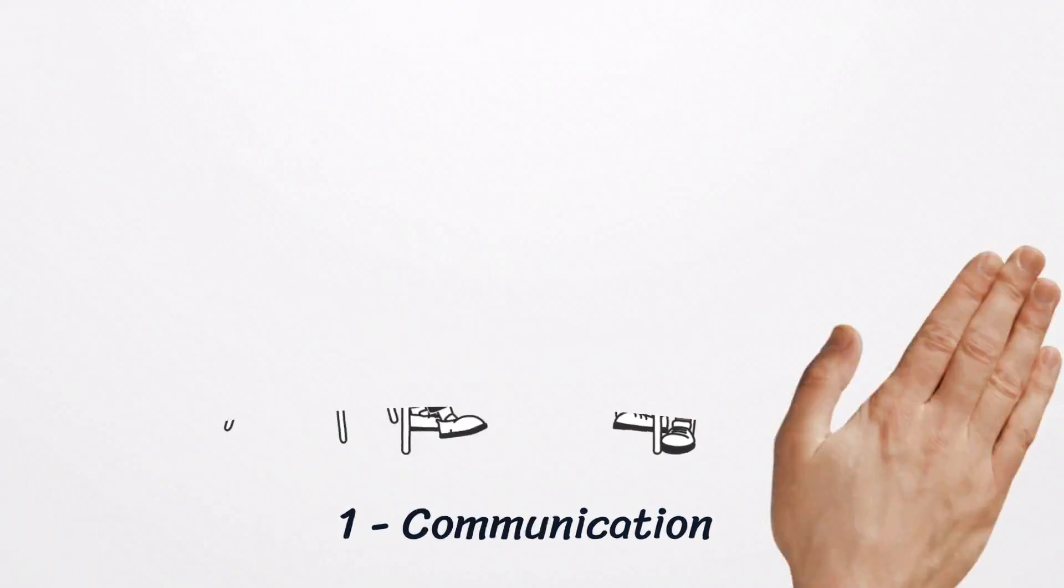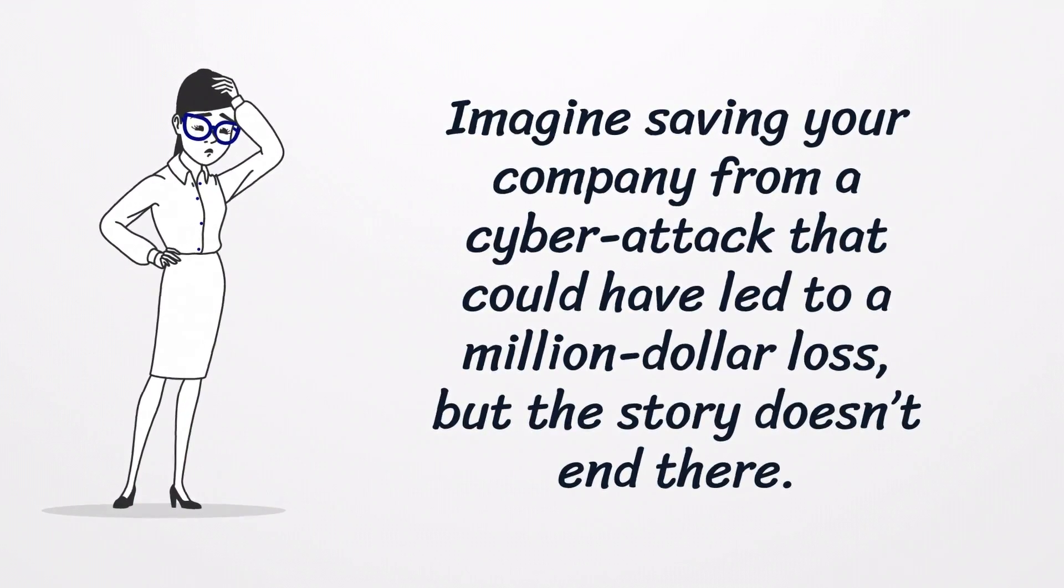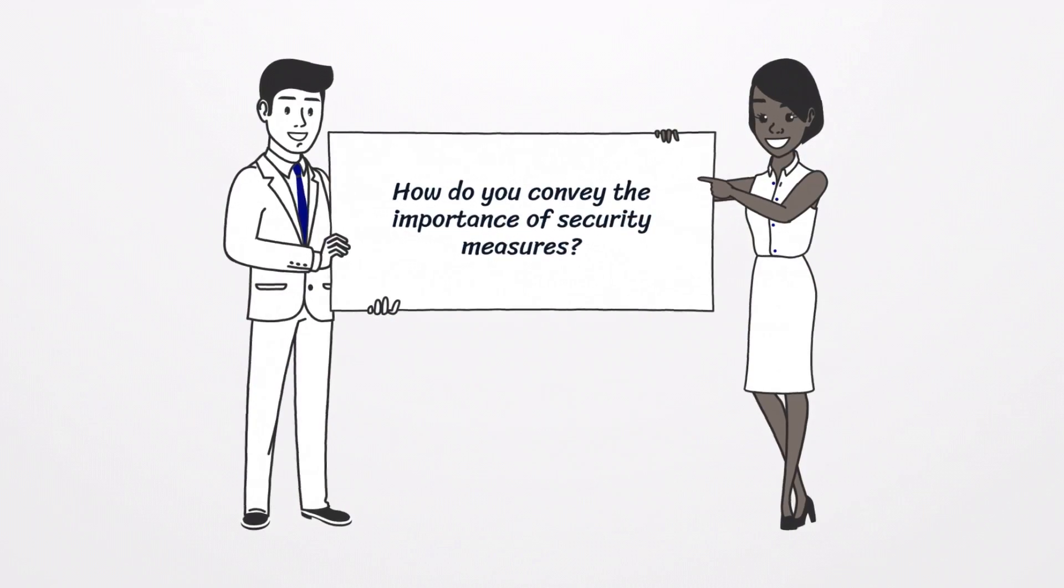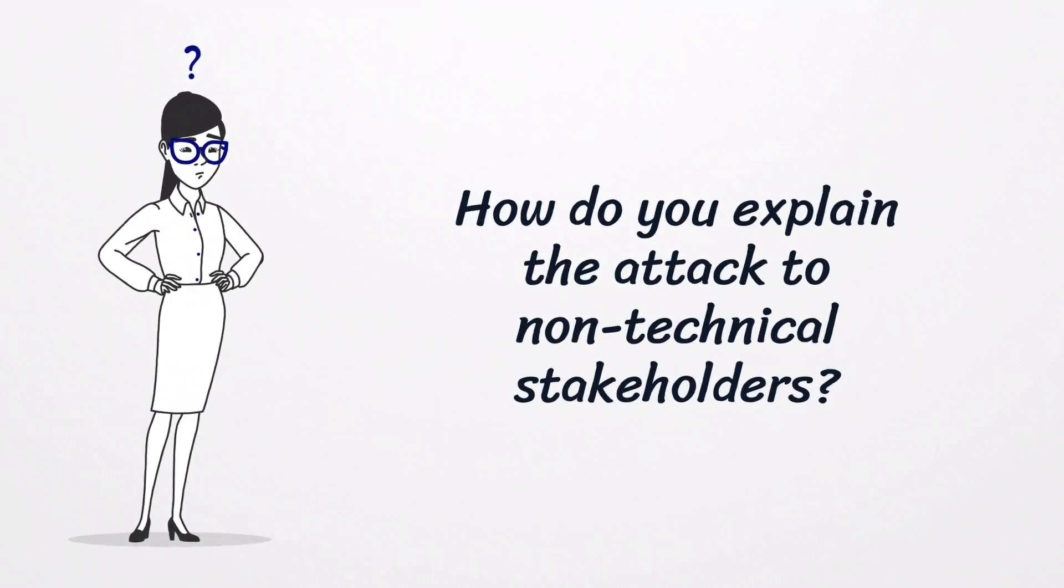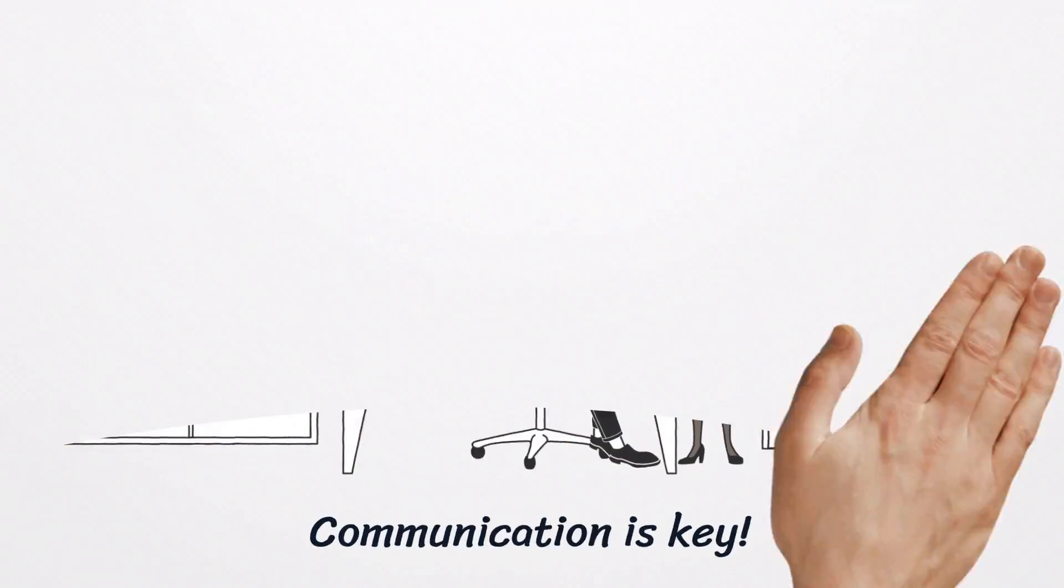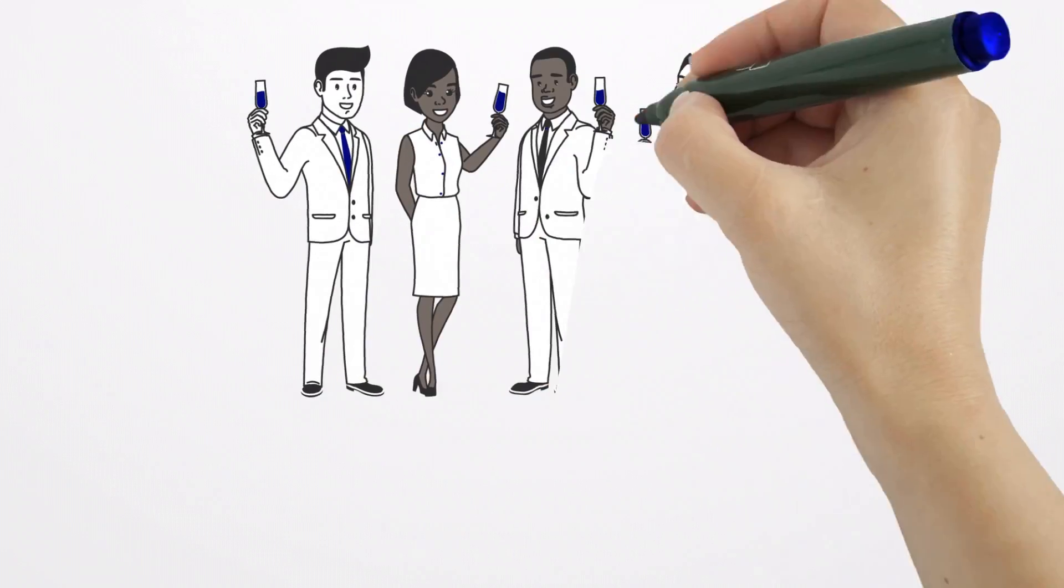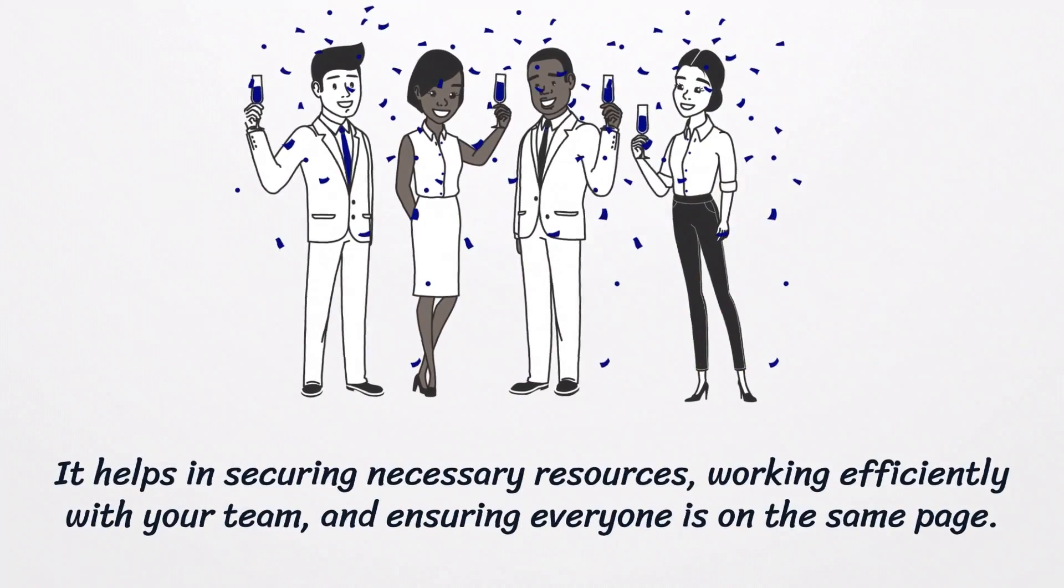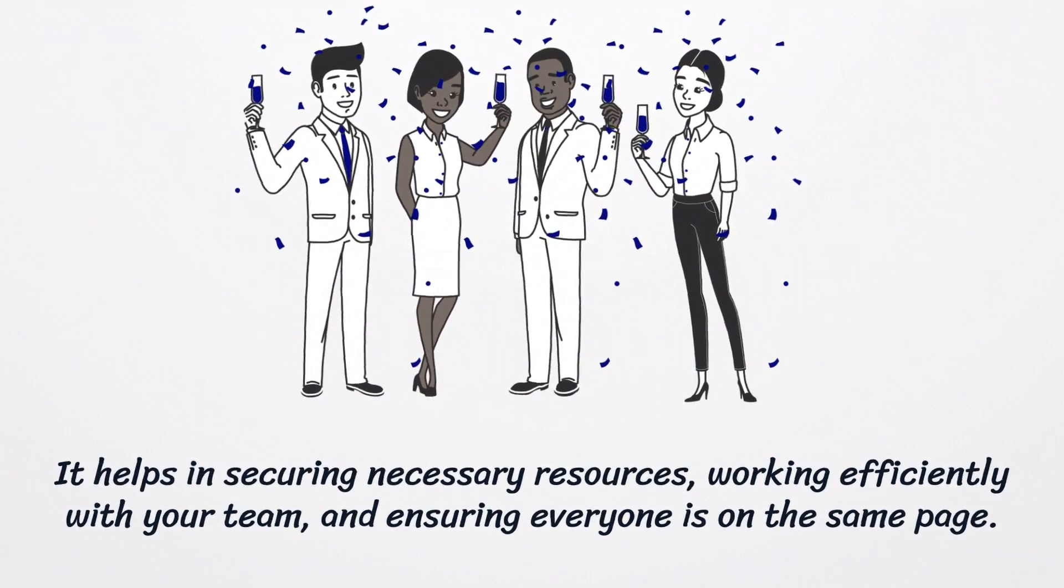First, Communication. Imagine saving your company from a cyberattack that could have led to a million dollar loss. But the story doesn't end there. How do you convey the importance of security measures? How do you explain the attack to non-technical stakeholders? Communication is key. Being able to articulate complex cybersecurity issues in relatable and simple terms is invaluable. It helps in securing necessary resources, working efficiently with your team, and ensuring everyone is on the same page.